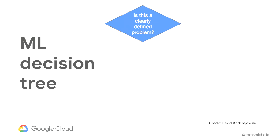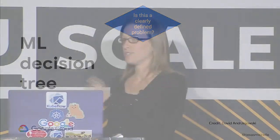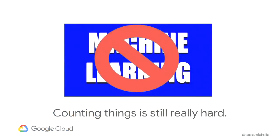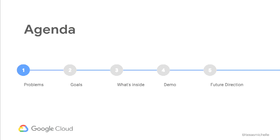Before you get started doing any machine learning, it would be irresponsible if I didn't ask you to pose these two questions: Do you have a very clearly defined problem? And can you solve it in a deterministic way? Because if you can do that, by all means, don't use machine learning. If anything my ten years as a data engineer has taught me, it's that machine learning is not always the answer, despite what you may have heard on the internet. Counting things is still really hard, so don't use machine learning unless you have to.